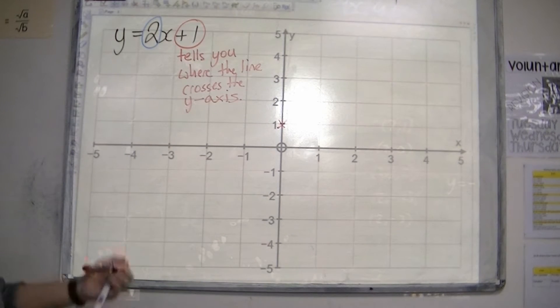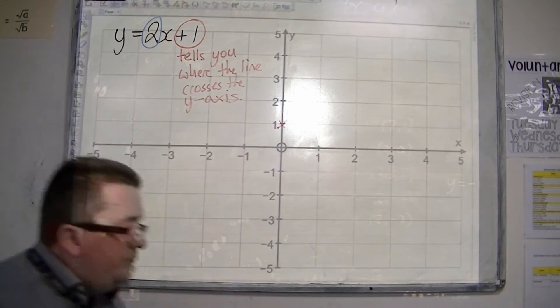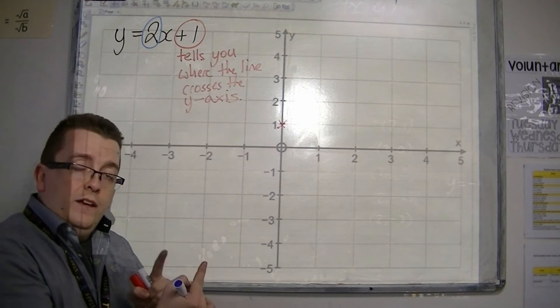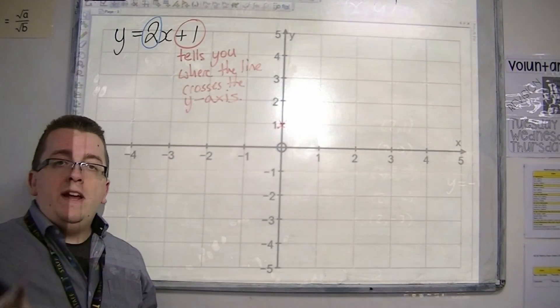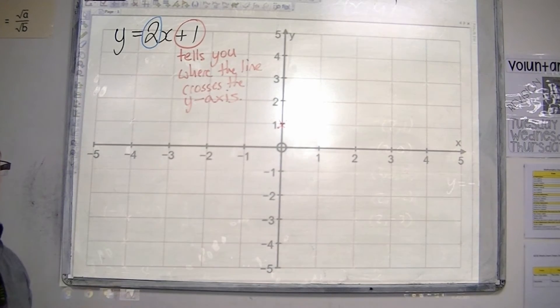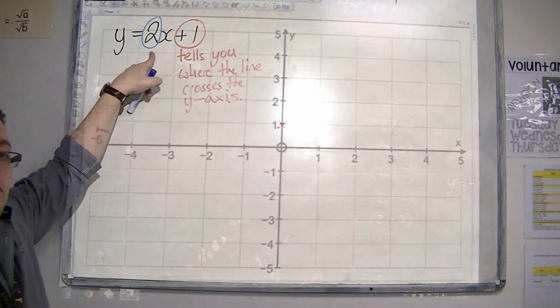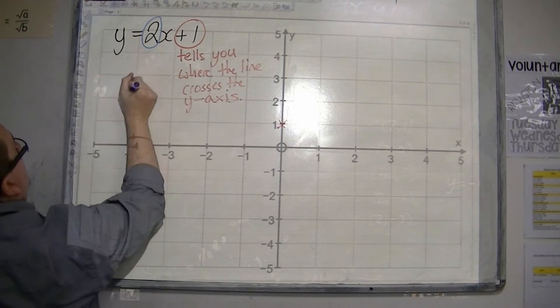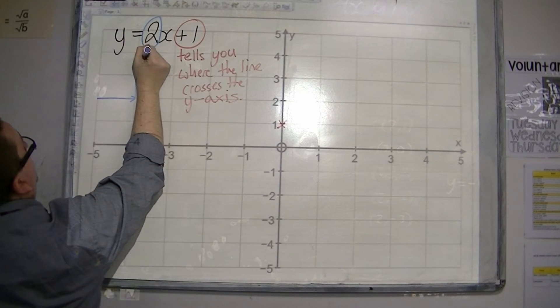The second bit comes from this number in blue, the 2. That number that is in front of the x tells you the gradient of the line. Now the word gradient really means steepness, so how steep the line is. So it's telling me that it has a gradient of 2, and what that means is that for every 1 along, you're going up 2.